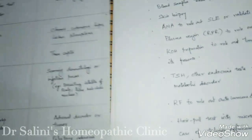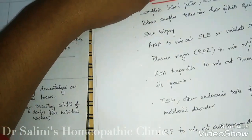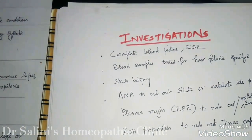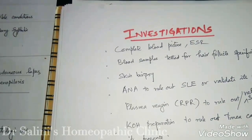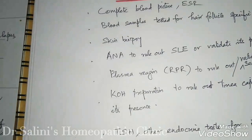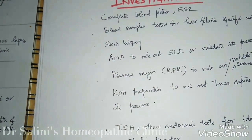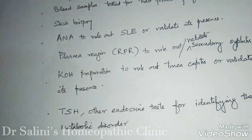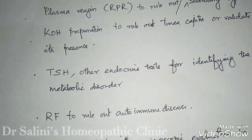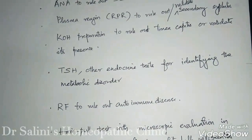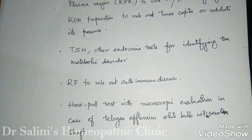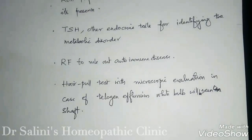Now let us look at commonly done investigations. We do complete blood count, ESR, and blood samples are tested for hair follicle-specific auto-antibodies. Skin biopsy is done. ANA — anti-nuclear antibodies — is done to rule out or validate the presence of SLE (systemic lupus erythematosus). Plasma reagent is done to rule out or validate secondary syphilis. KOH preparation (potassium hydroxide) is to rule out tinea capitis.